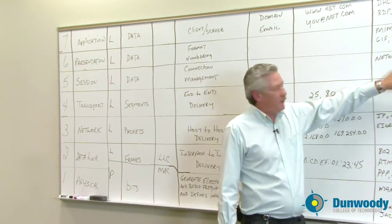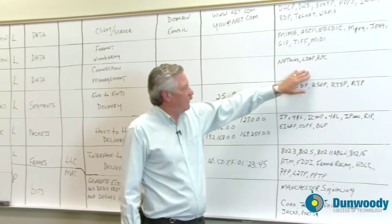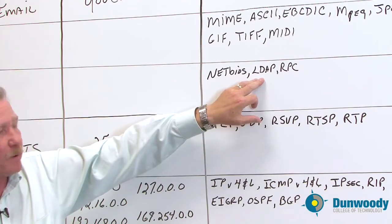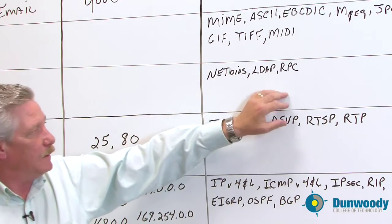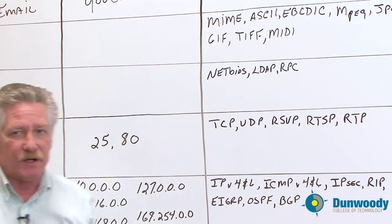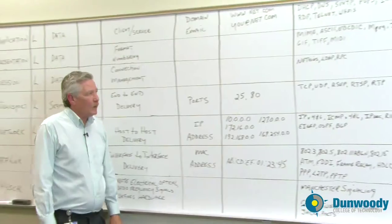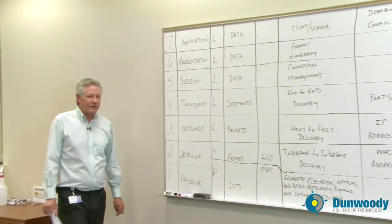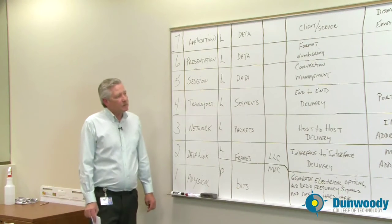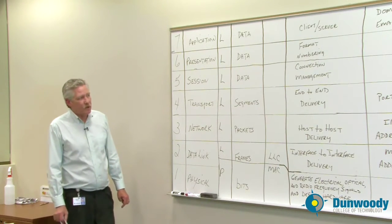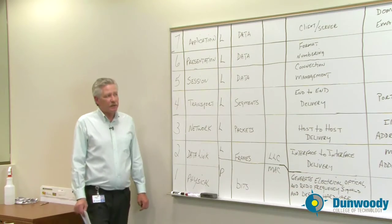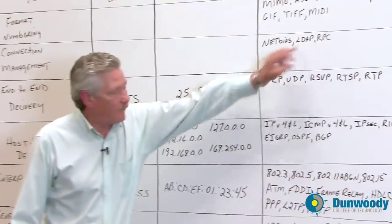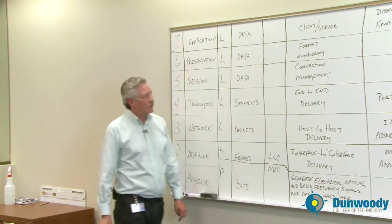Three of the protocols found at the session layer: the first one is NetBIOS, the second is LDAP, or Lightweight Directory Access Protocol, and the third is Remote Procedure Call. We all know LDAP from the use of things like Active Directory. Over at the University of Minnesota, they actually deal with the grandfather of LDAP, the X.500 protocol.